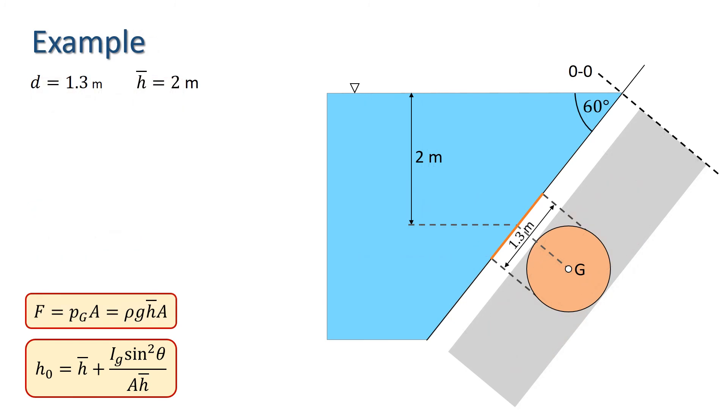Let's look at an example. Suppose we have a reservoir of water with a circular gate lying on a plane at an angle 60 degrees to the horizontal. The circle has diameter 1.3 metres, and its centre of gravity is 2 metres below the surface of the water. We want to determine the hydraulic thrust on the gate.